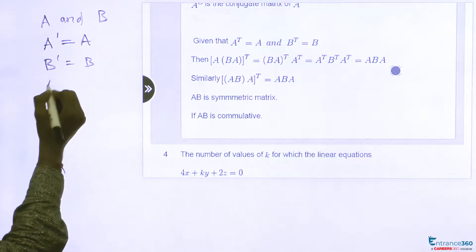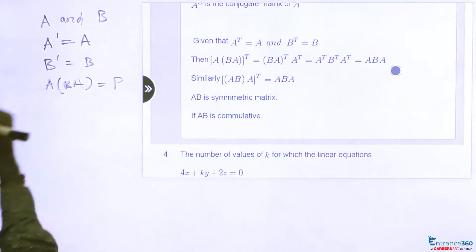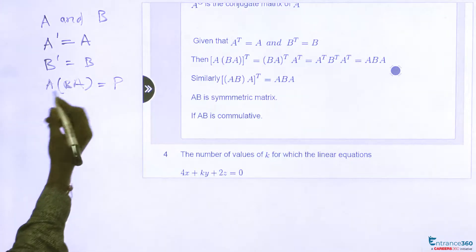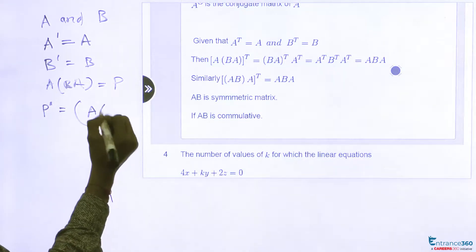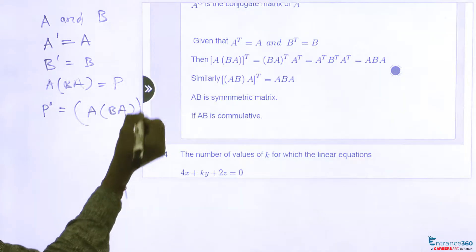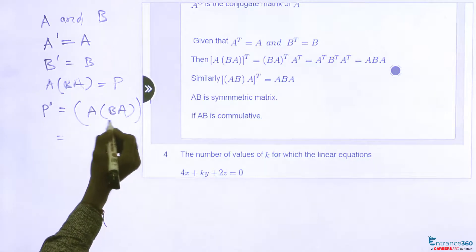First statement is given that ABA. Let's equate this with something P. Then take transpose both sides, P transpose equal to (ABA) transpose. Using the property of transpose and opening this bracket,